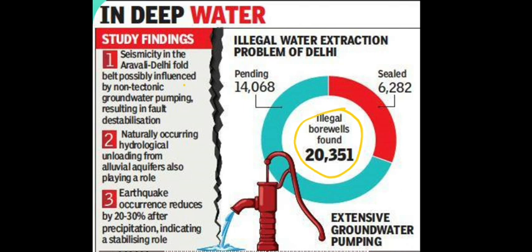The seismicity in the Aravalli Delhi fold belt is possibly influenced by non-tectonic groundwater pumping, resulting in fault destabilization. Naturally occurring hydrological unloading from alluvial aquifers also plays a role. Earthquake occurrence reduces by 20-30% after precipitation, indicating a stabilizing role.